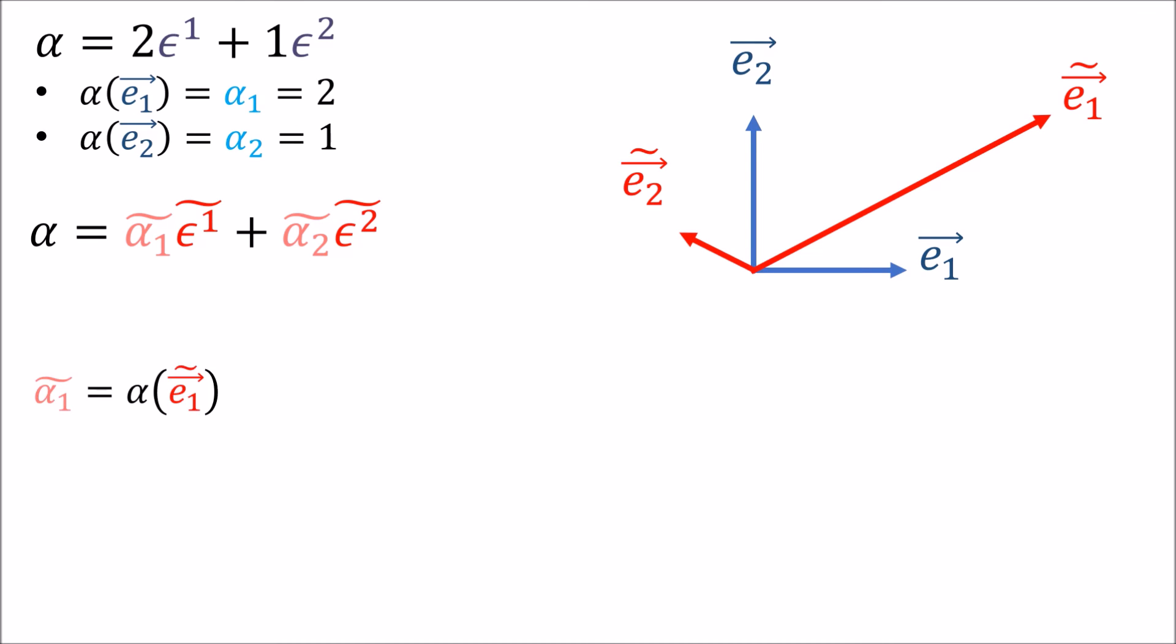What's the first component? That's alpha of ẽ₁. Looking here we see that ẽ₁ is just 2e₁ plus 1e₂, and by linearity of alpha we can do this. We know how alpha acts on e₁ and e₂ from up here—these are just the components of alpha in the old basis. This works out to be 5.